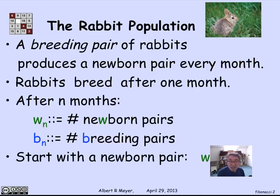Let's assume that we start off with a single newborn pair. They're not even breeding yet. So W0 is 1. And then we have these two definitions of Wn and Bn.